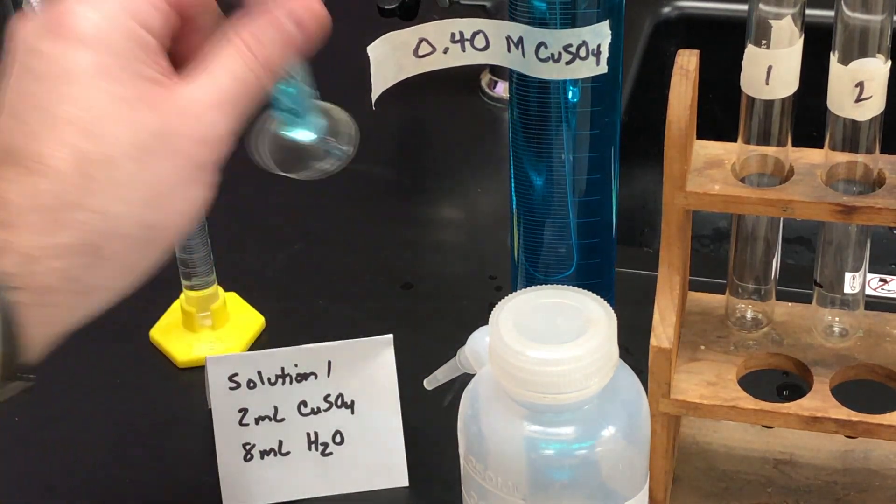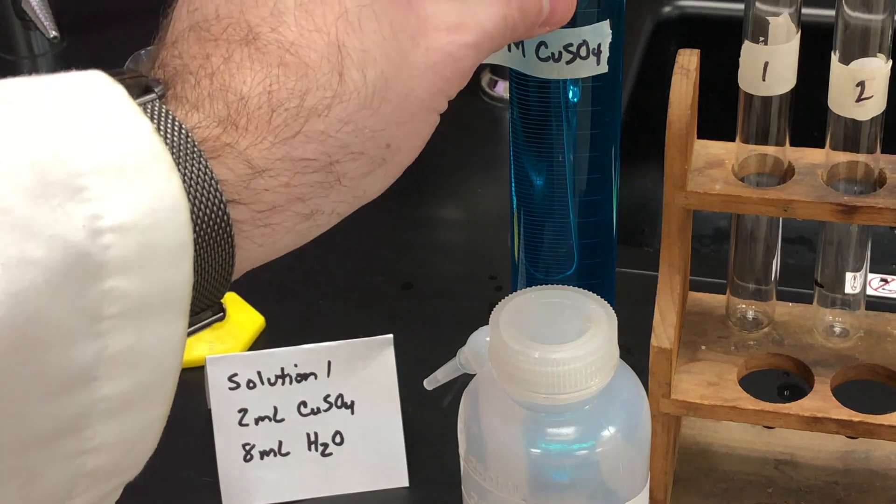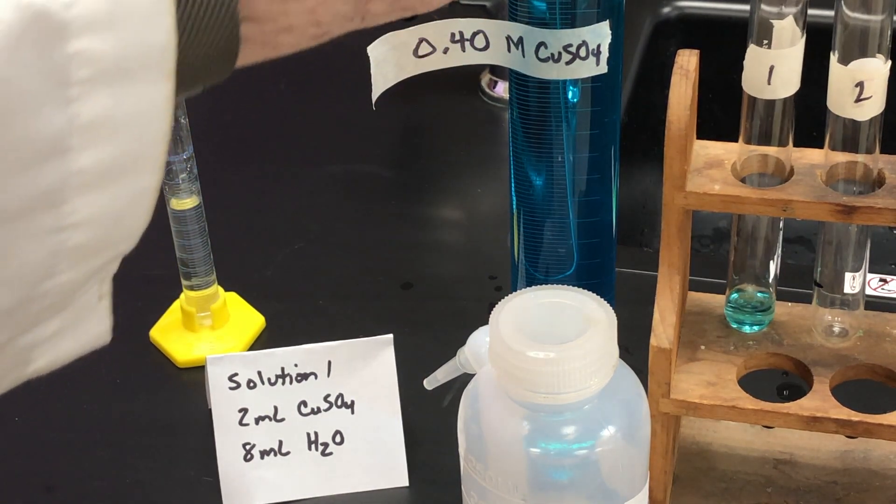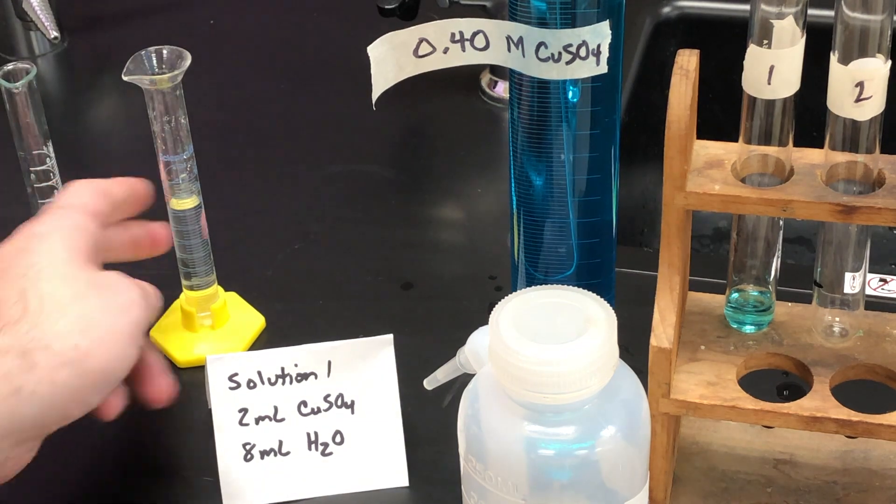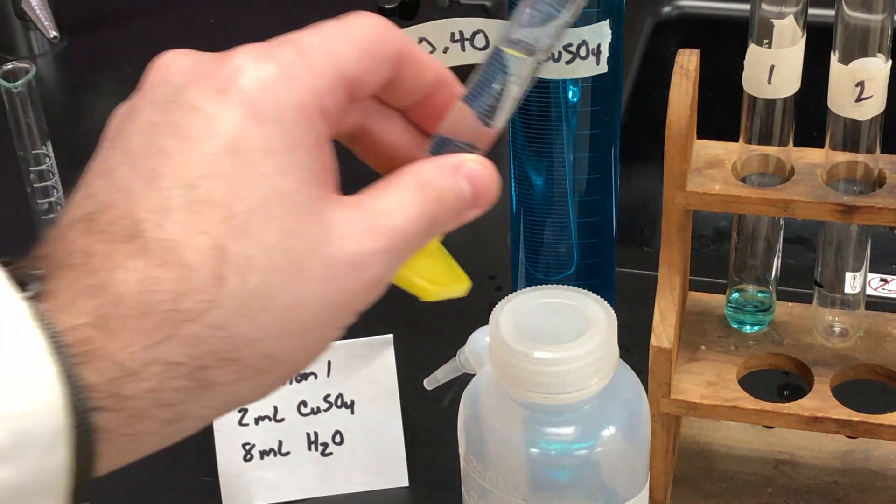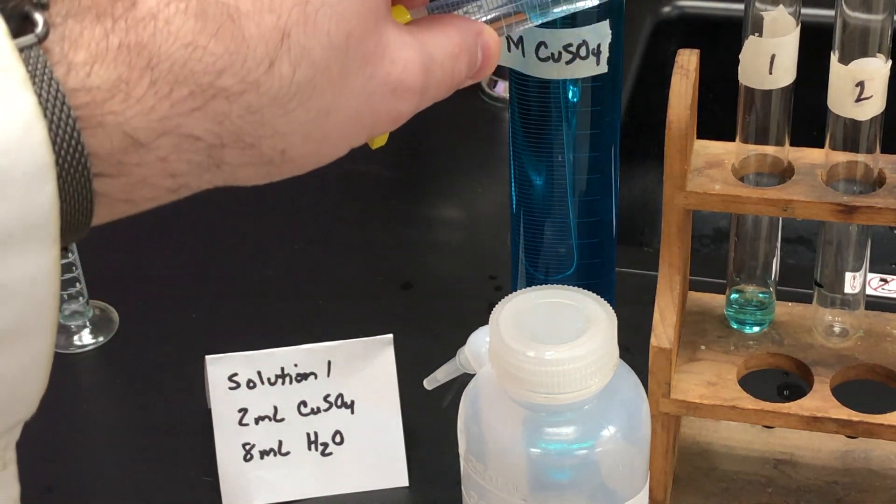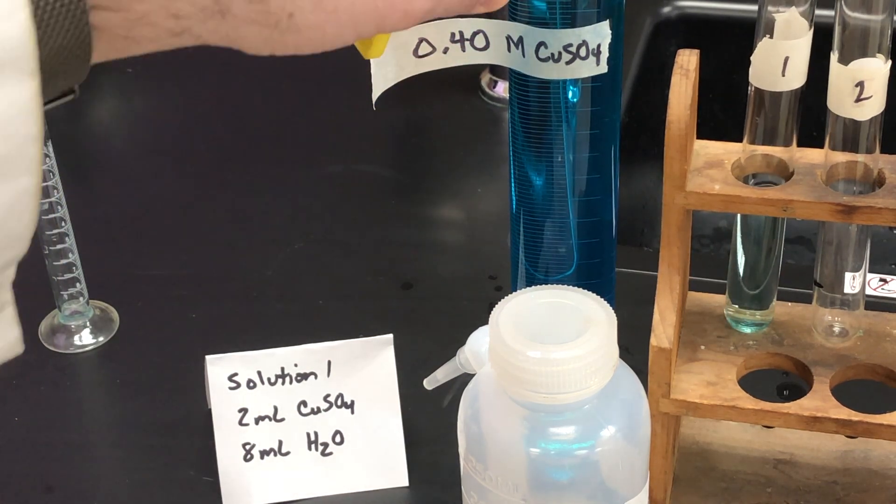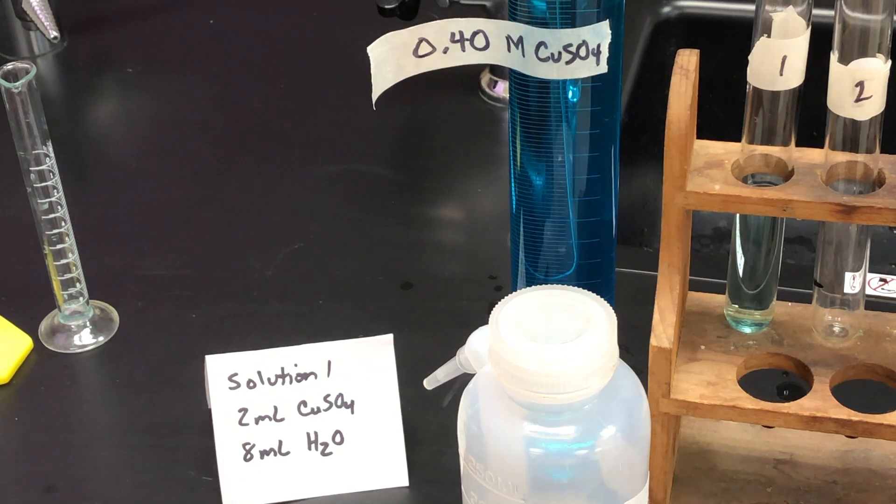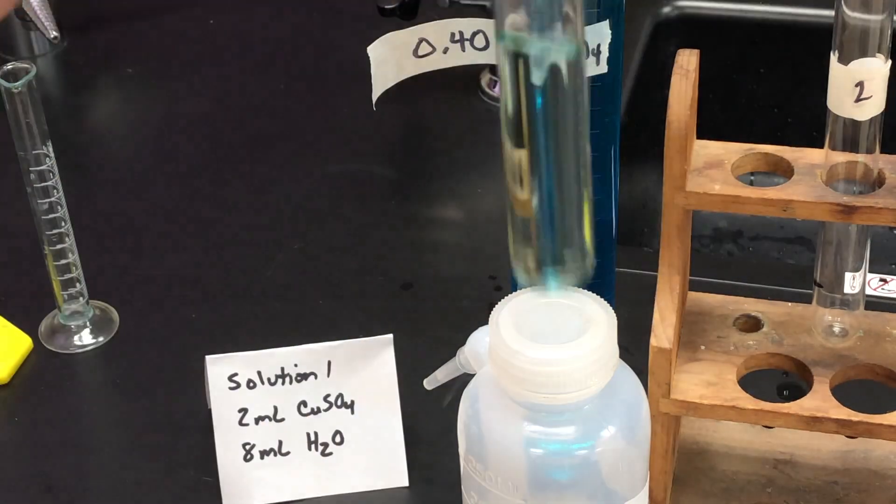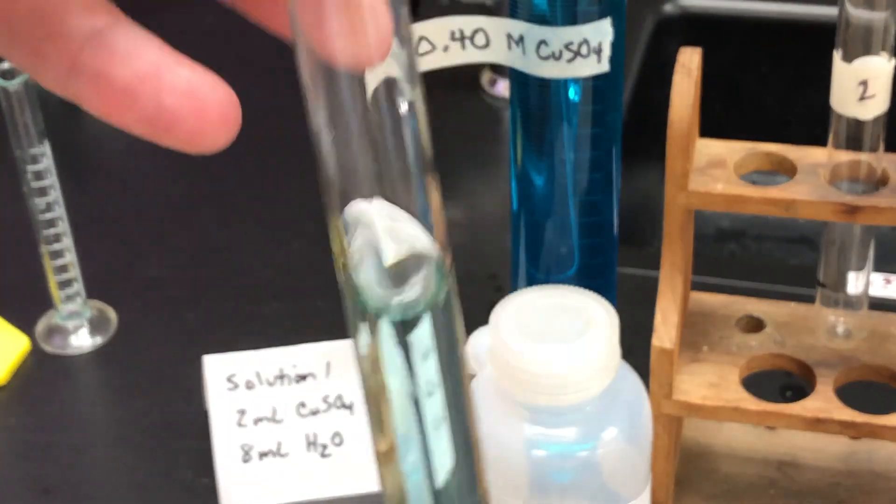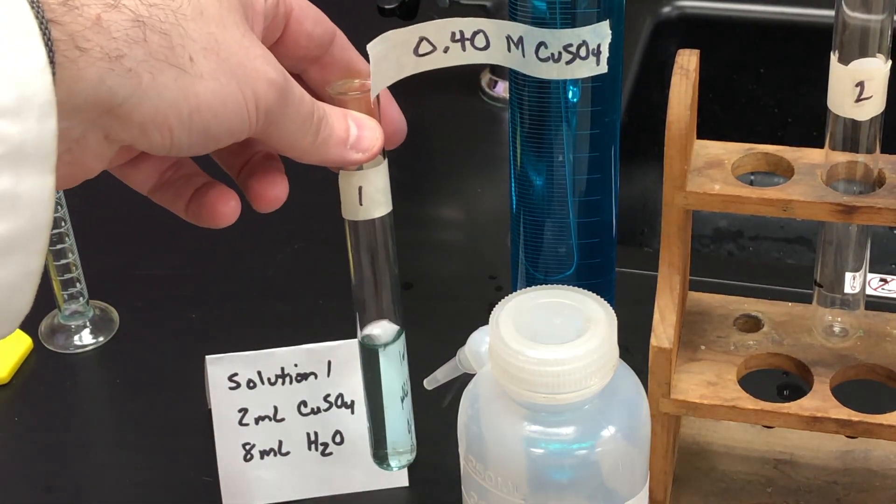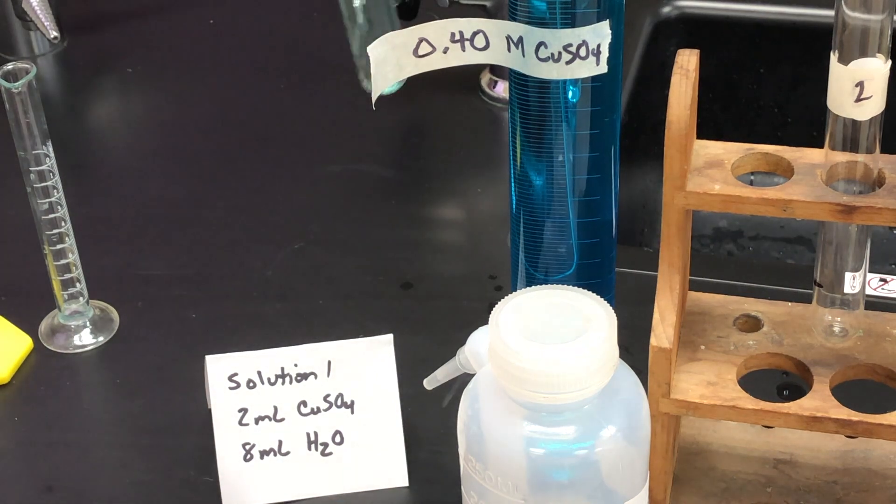So what's going to happen is we'll mix these together and let it sit so they can mix properly. So what you do first is add the copper sulfate, pour it in, and then add the water. Pour it in, and then give it a little shake, and there you have it. This is test tube one, and I want you to notice how pale the blue is compared to the starting solution.